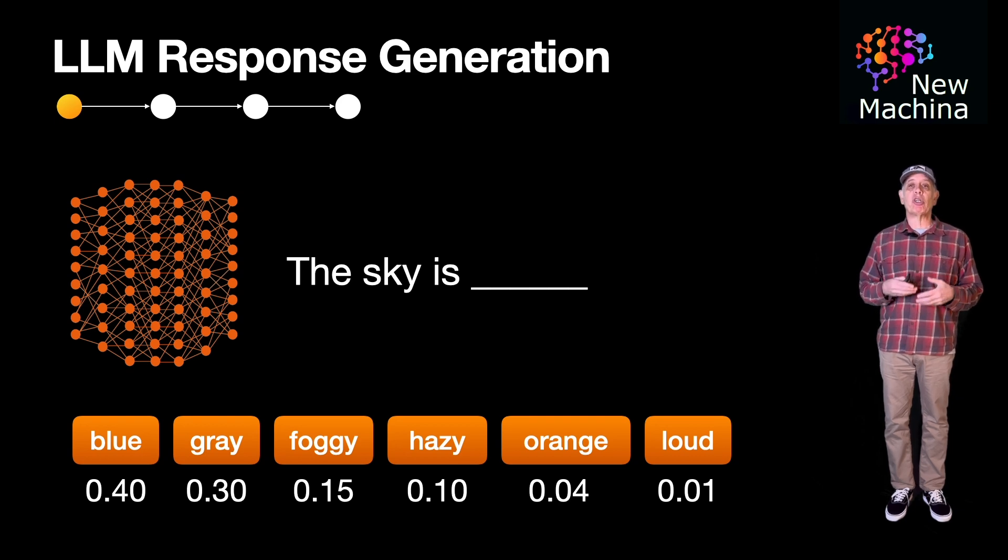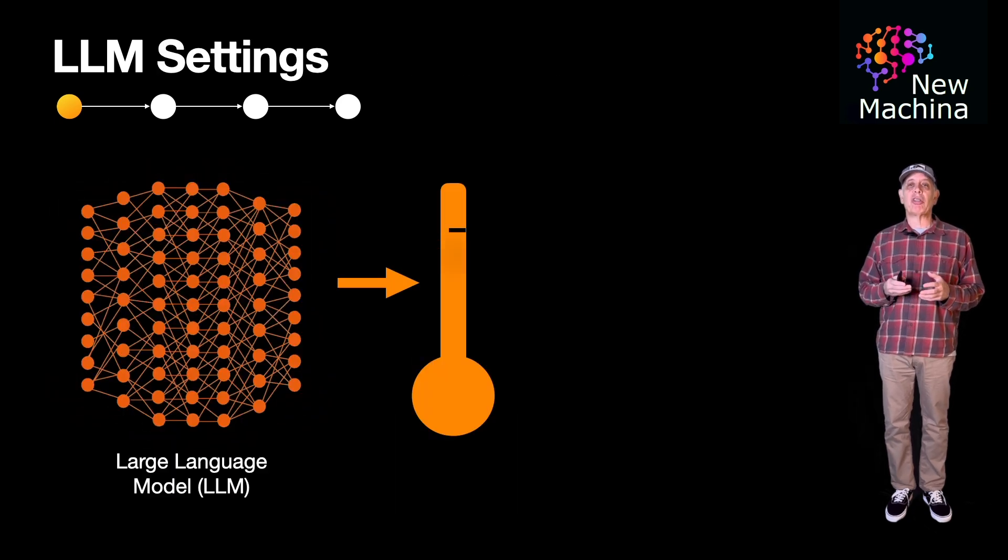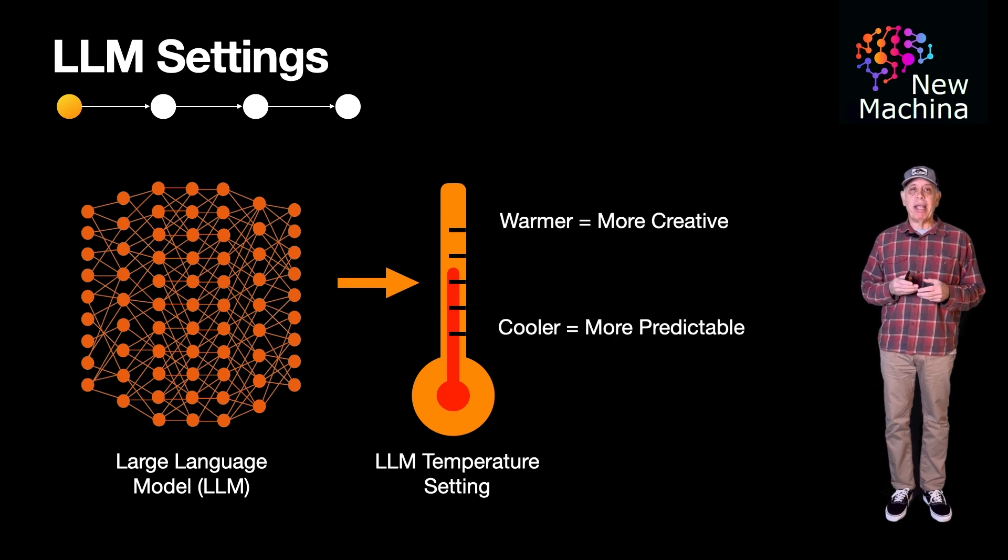These probabilities are derived from patterns and relationships the LLM has learned from its training data. The three LLM settings that allow you to adjust how the LLM generates responses are temperature, Top-P, and Top-K. I covered temperature in the previous video. In summary, temperature adjusts the probability scores to make the model's output more predictable when setting a lower temperature or more creative when setting a higher temperature.